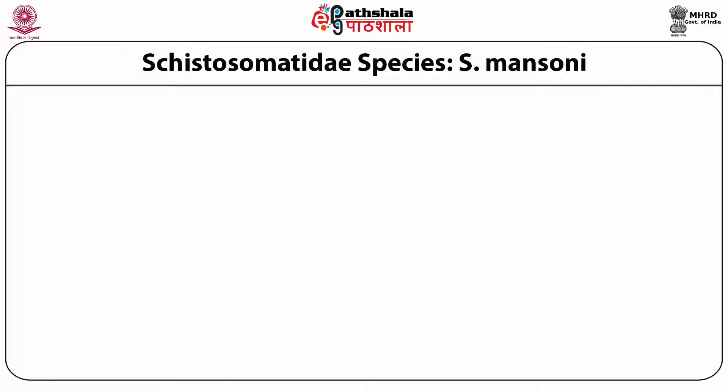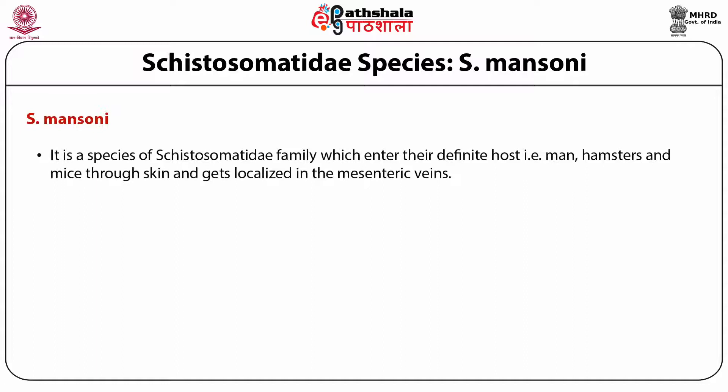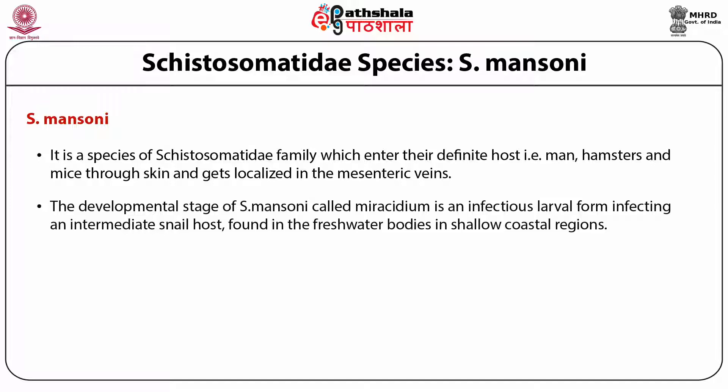Cystosoma mansoni is a species of Cystosoma family which enters their definitive host — man, hamsters and mice — through the skin and gets localized into the mesenteric venous. The developmental stage called miracidium is an infectious larval form infecting an intermediate snail host found in freshwater bodies in shallow coastal regions.